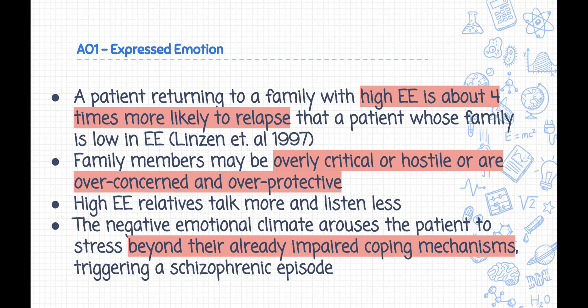Schizophrenics have a lower tolerance for intense environmental stimuli, particularly intense emotional comments and interactions with family members. The negative emotional climate arouses the patient to stress beyond their already impaired coping mechanisms, thus triggering a schizophrenic episode. A patient returning to a high EE family is therefore about four times more likely to relapse than a patient whose family is low in EE. Researchers have concluded this is more important in maintaining schizophrenia than in causing it in the first place.